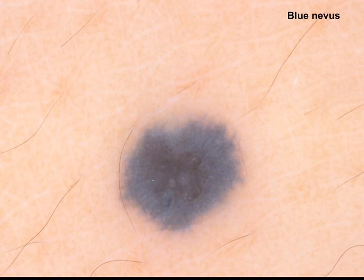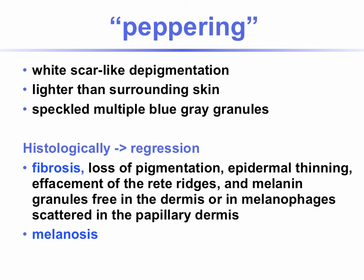In a blue nevus, this is different. We see as well a bluish pigmentation, but this time it fills out the entire lesion, and it doesn't have that ground-glass haze.